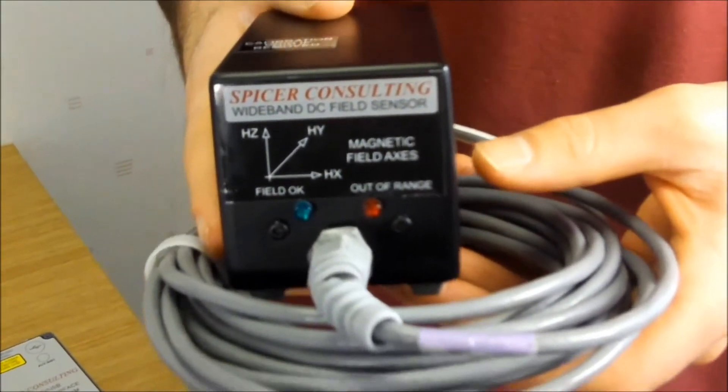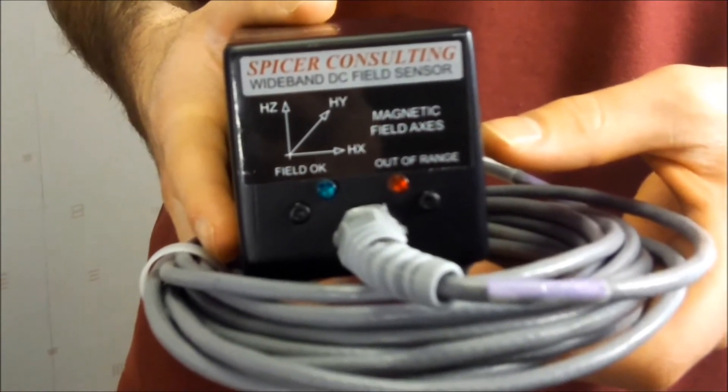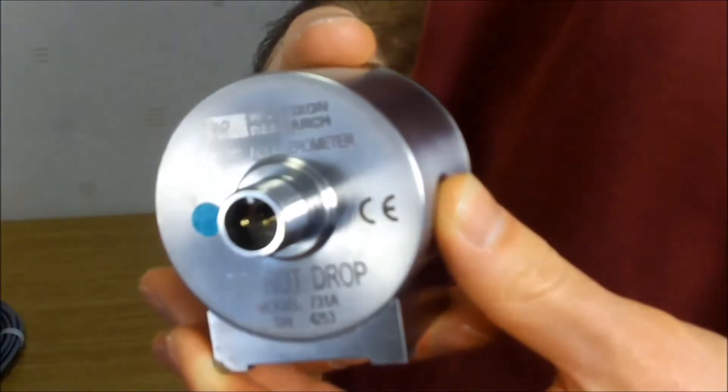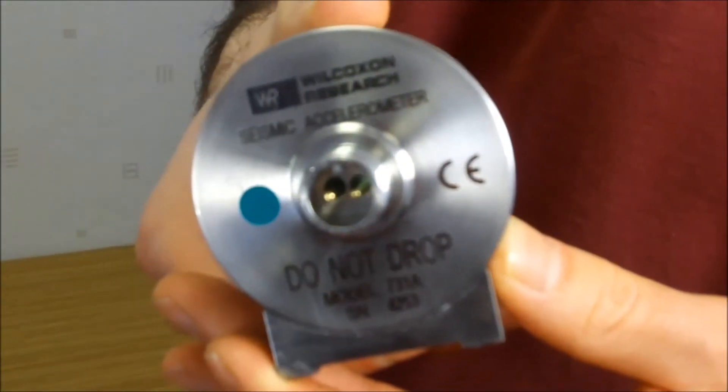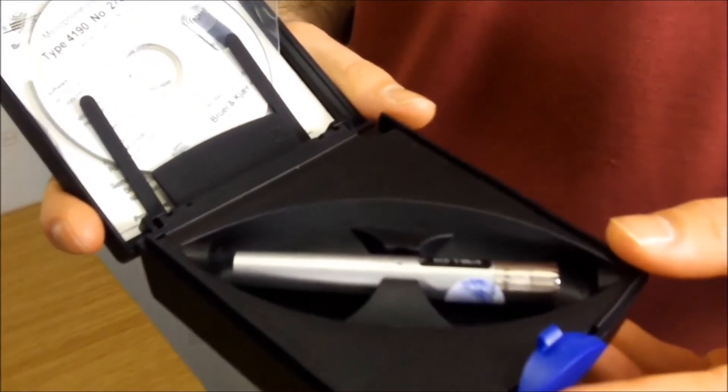This is a Spicer Consulting 3-axis magnetic field DC sensor. It can be used to measure AC and DC fields. This is a Wilcoxon Research seismic accelerometer. There are three that come with a full SC11SI package. There is also a Brüel & Kjær high precision microphone included.